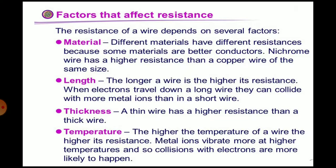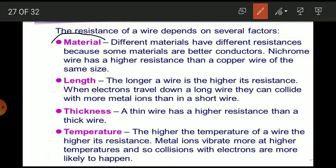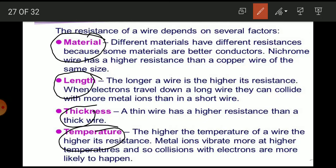Factors affecting resistance: nature of the material, length, thickness, and temperature. If you compare copper with iron, both will have different resistance because their nature is different — their atomic structure is different and they have a different number of free electrons. Different metals have different properties, different numbers of electrons, so they will have different resistance. Resistance also depends on the physical condition of the material and on temperature.